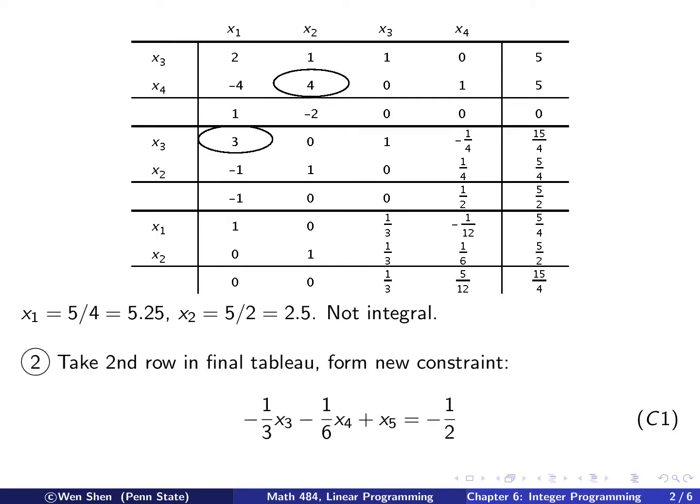So since now this number, the fractional part is 0.5, is bigger than this one, 0.25. We're going to take this row, and then we form the constraint. So let's go through it. So we look at all the coefficients and look at those that are not integer. So we see this one is not integer, and the fractional part is 1 third, and we put a negative sign. And this one, the fractional part is 1 sixth, we take it, and we put a negative sign. And then we add a new variable, x5, and equal to the right-hand side. For this number, the fractional part is half, but then we need to put the negative one in. So this becomes the new constraint to add.